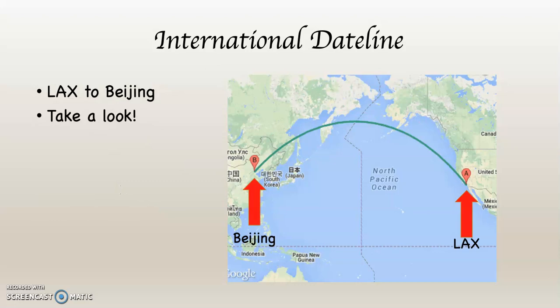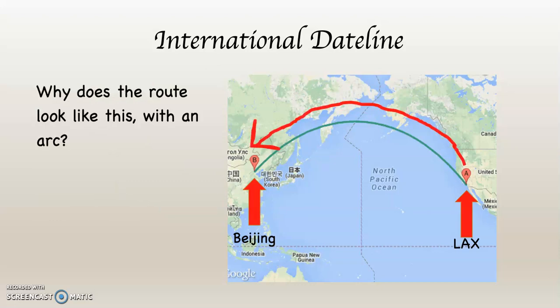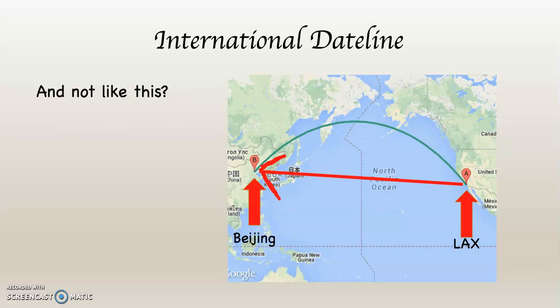Take a look at this route that we're flying. Why does the route look like this with an arc? Why doesn't it go in what appears to be a straight line? Remember, airlines are in the business of making money — they want to fly the quickest, shortest route possible, use the least amount of fuel, load the plane up and get going. Therefore, they always take the shortest possible route.